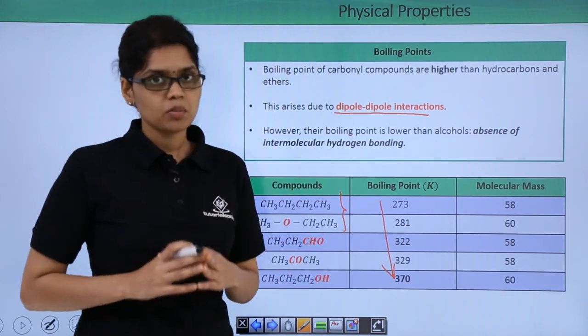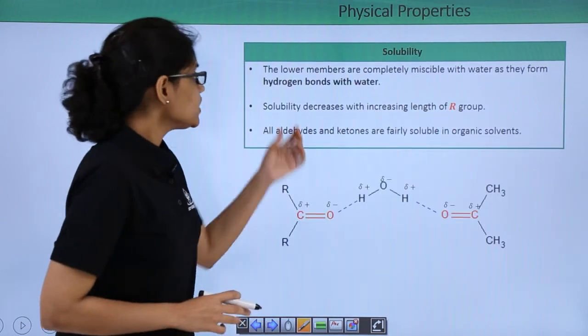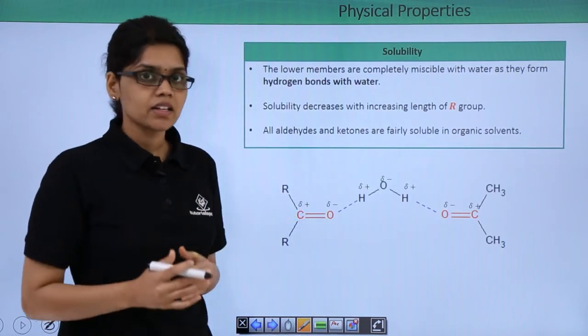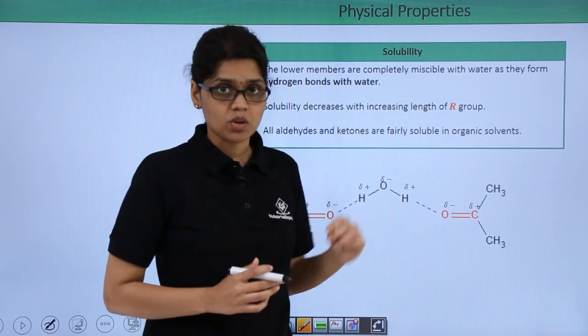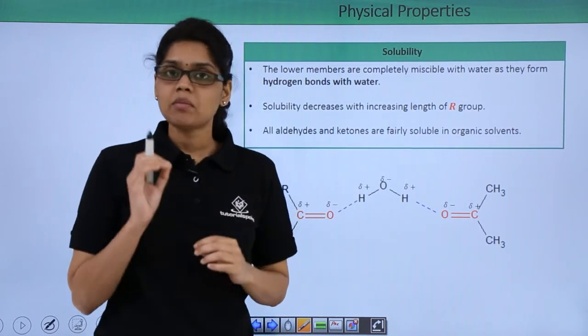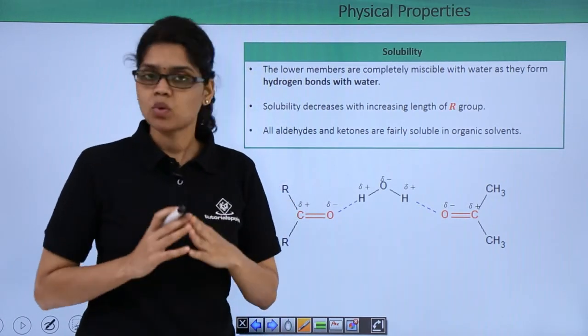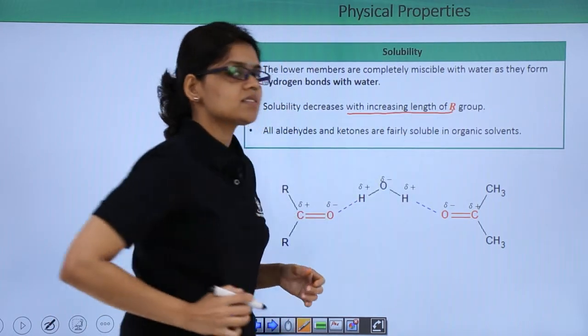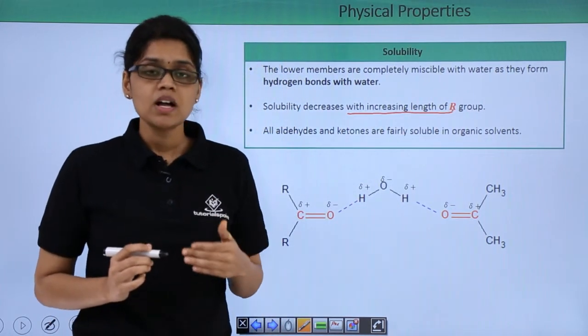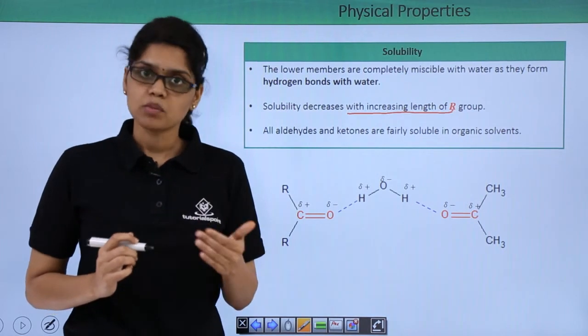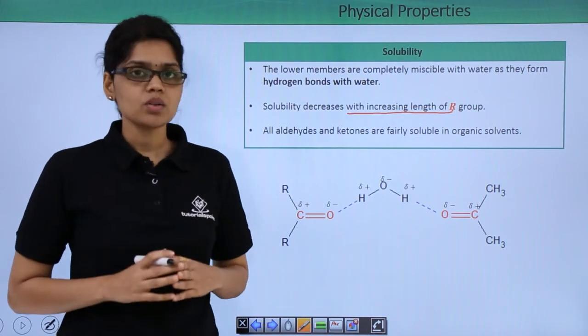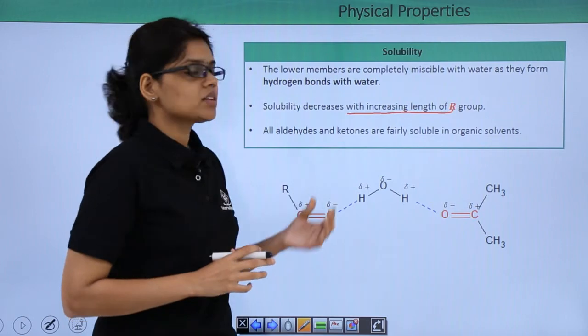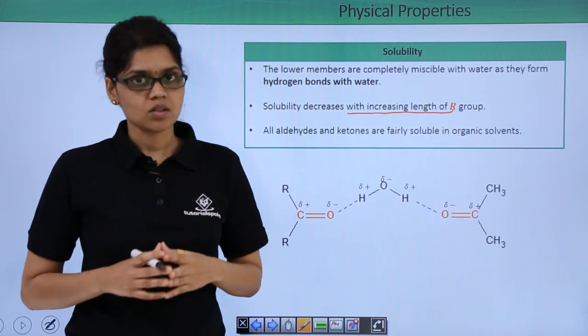Now let's look at solubility. As you can see lower members of aldehydes and ketones are completely miscible with water and this is due to their ability to form hydrogen bonds with water molecules. However, solubility decreases with increase in length of the R group because we know that the alkyl group is hydrophobic in nature. You can also note that aldehydes and ketones are fairly soluble in organic solvents.